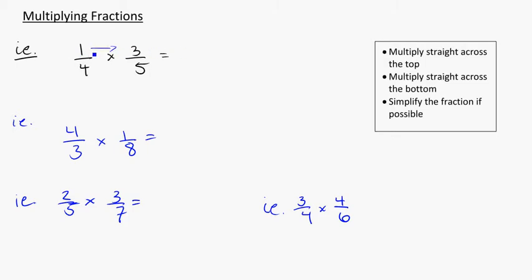Multiply straight across the top: 1 times 3 gets me 3. Multiply straight across the bottom: 4 times 5 gets me 20. Check to see if we can simplify it—3 over 20, nothing those both share in common, so you're done.